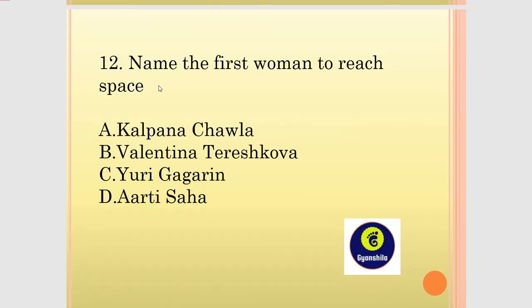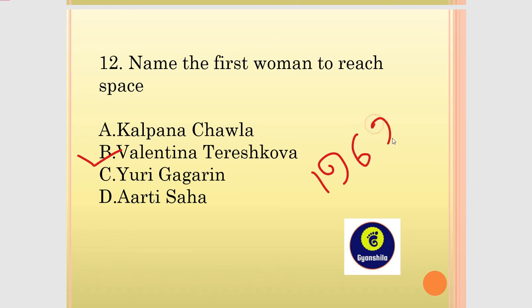Name the first woman to reach space. Option B, Valentina Tereshkova. The first place of the planet — she went into space in 1963. Valentina Tereshkova is the first woman to reach space.